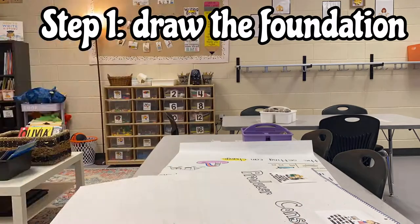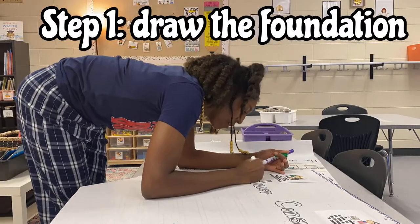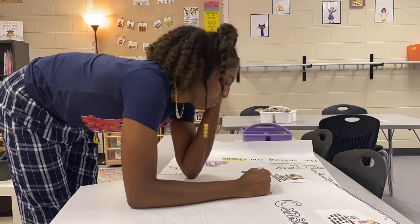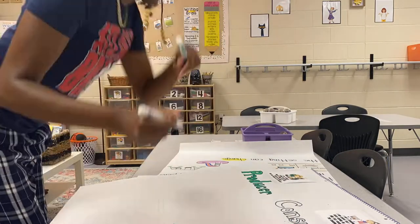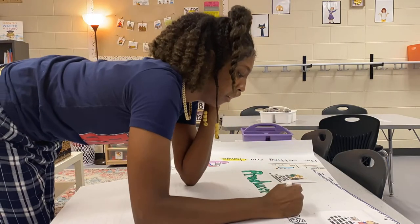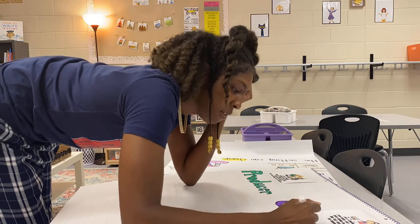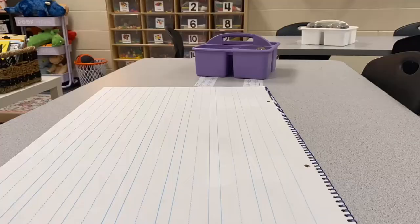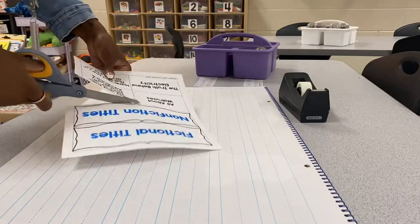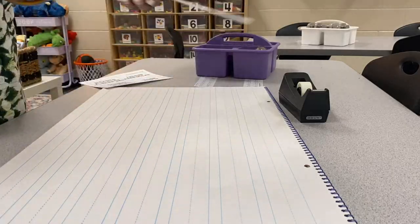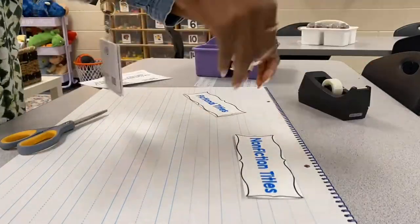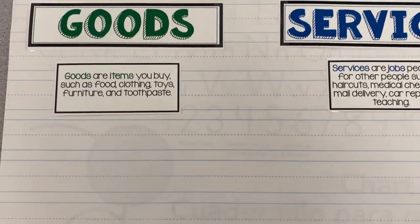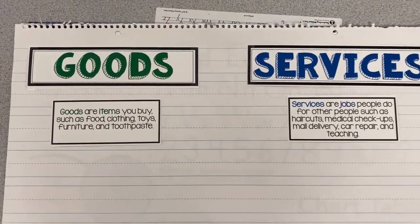What you see me doing as the first step to making an interactive anchor chart is drawing the foundation. Whether you print or actually draw by hand your materials, you need to do that step first. Go ahead and organize your anchor chart in the way that you would want it to look if it were posted.